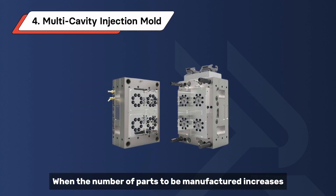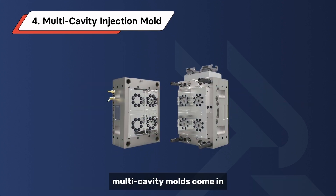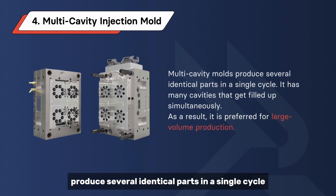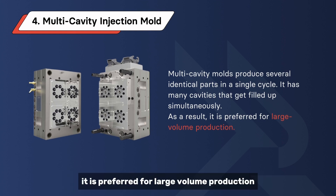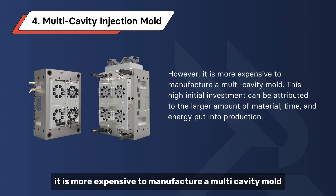When the number of parts to be manufactured increases, multi-cavity molds come in. Multi-cavity molds produce several identical parts in a single cycle, with many cavities that get filled up simultaneously. As a result, it is preferred for large-volume production. However, it is more expensive to manufacture a multi-cavity mold.